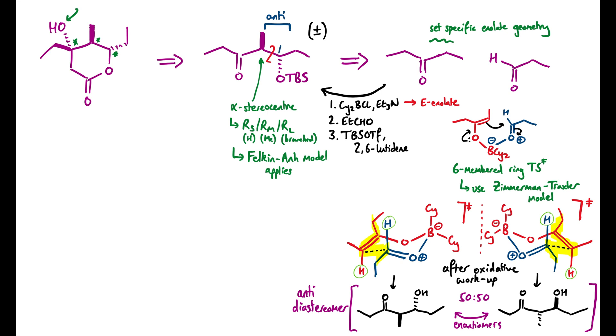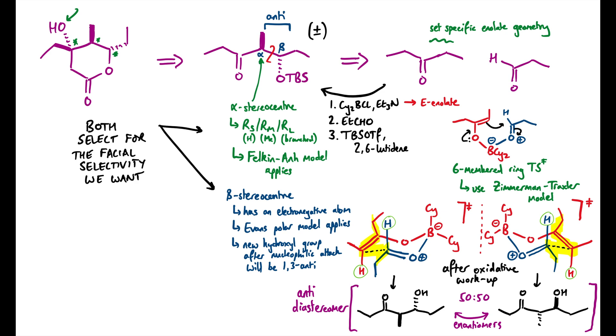However, I should also note that it is possible to get stereoselective reactions when you have oxygenation in the beta position as well. This is a smaller effect. That beta stereocenter with an electronegative atom means that the Evans polar model applies. In these cases, the new hydroxyl group after attack of the nucleophile will be 1,3-anti to that beta stereocenter. Now we've been incredibly lucky with this choice of molecule, that if we apply both of these models, they both select for the facial selectivity for attack on that carbonyl that we want, to give us the correct stereocenter in our product without us having to put any more effort in. I can draw a quick projection to show that.